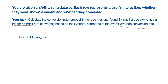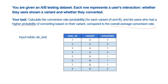Let's take a look at the input data. The input table contains three columns: user_id, variant, and converted. User_id is the unique identifier for the user. Variant is the version of the product the user was shown — it could be A or B. The converted column uses 1 to denote yes (the user converted) and 0 to denote no.